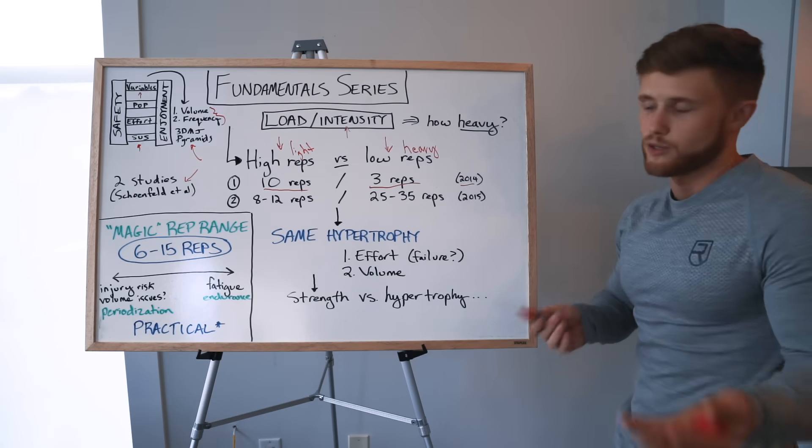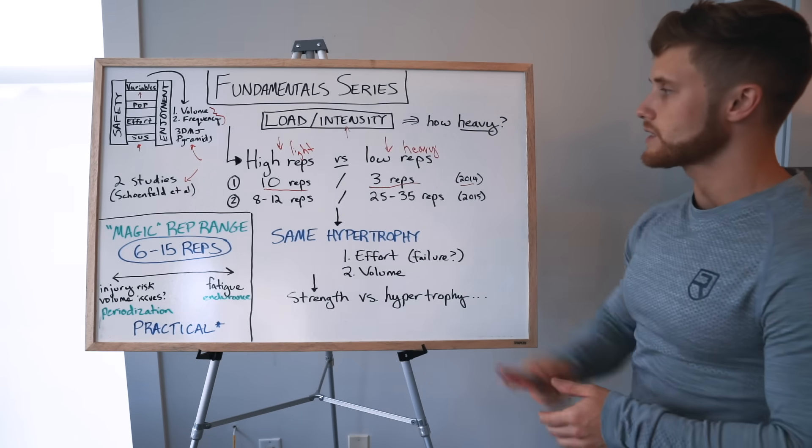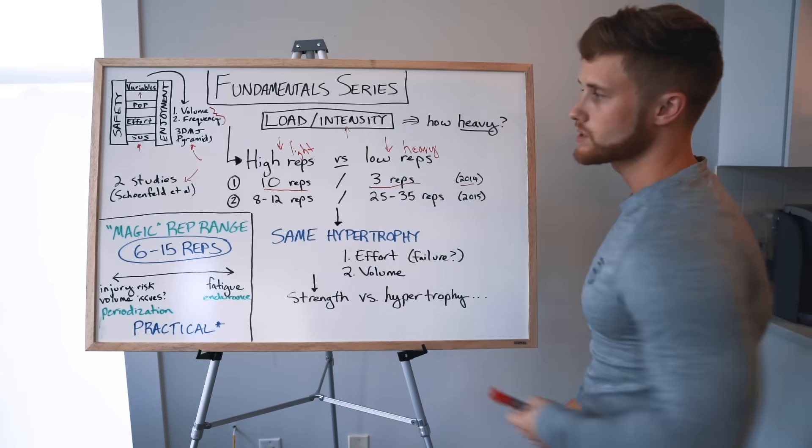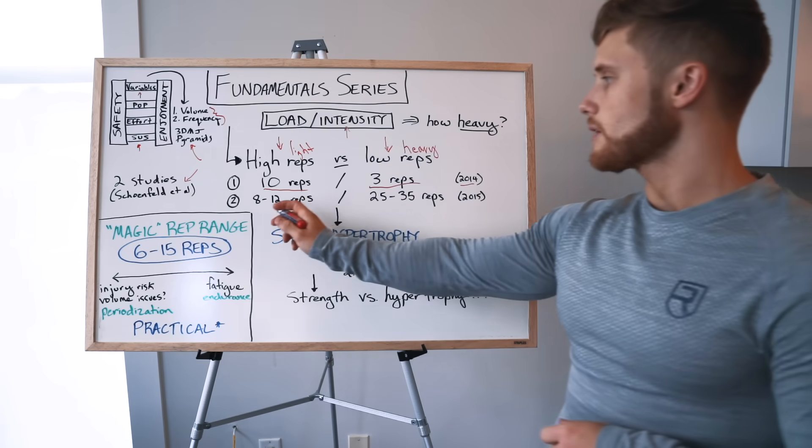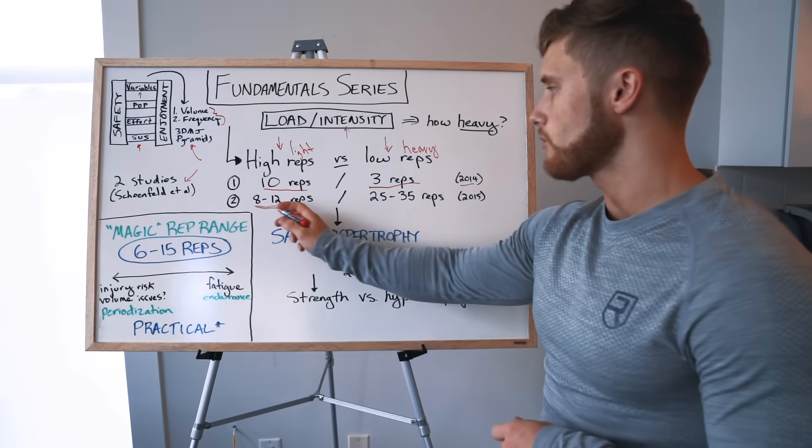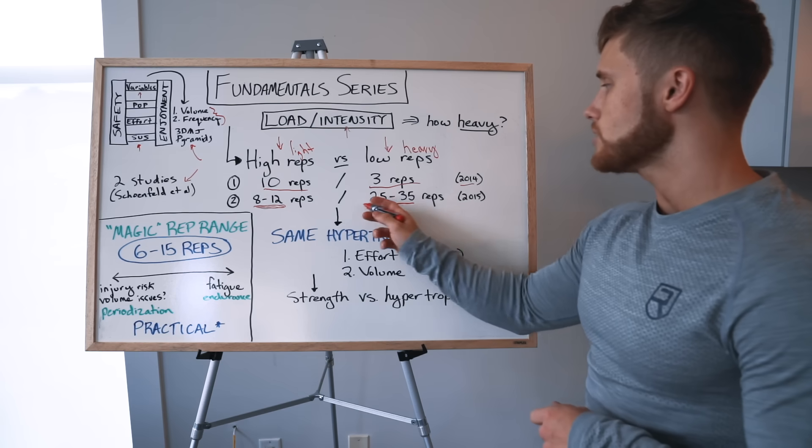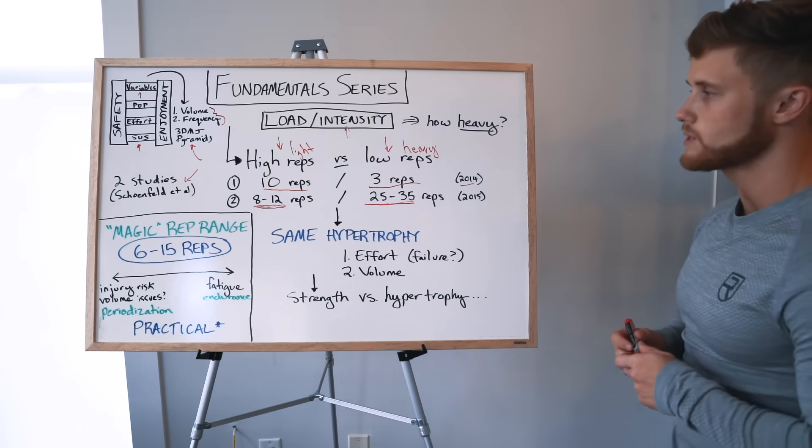Of course, if you're doing low reps, that means by default that you're doing heavy weight - so low reps equals heavy, and high reps equals light. You had one group doing very heavy, almost powerlifting style training, and another group doing more typical bodybuilding style training with 10 reps. The other study compared a 10 rep typical bodybuilding range with a very high rep range, so 25 to 35 reps, and that was a year later in 2015.